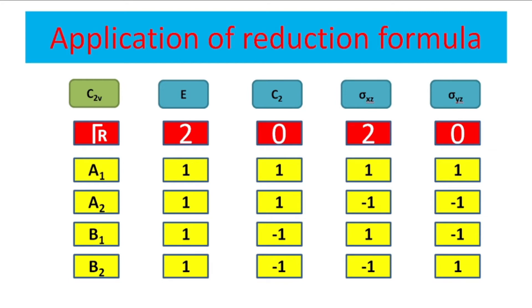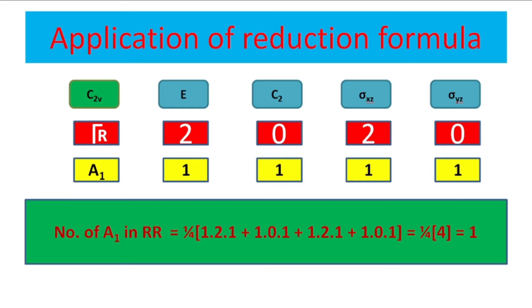Let us find how many times A1 occurs in that reducible representation. The number of times A1 occurs equals one upon h — h is 4, the order of the group. In brackets: n=1, χᵣ=2, χᵢ=1; plus 1 into 0 into 1; plus 1 into 2 into 1; plus 1 into 0 into 1. The total summation is 4, so 4 divided by 4 equals 1. A1 occurs one time in that reducible representation.